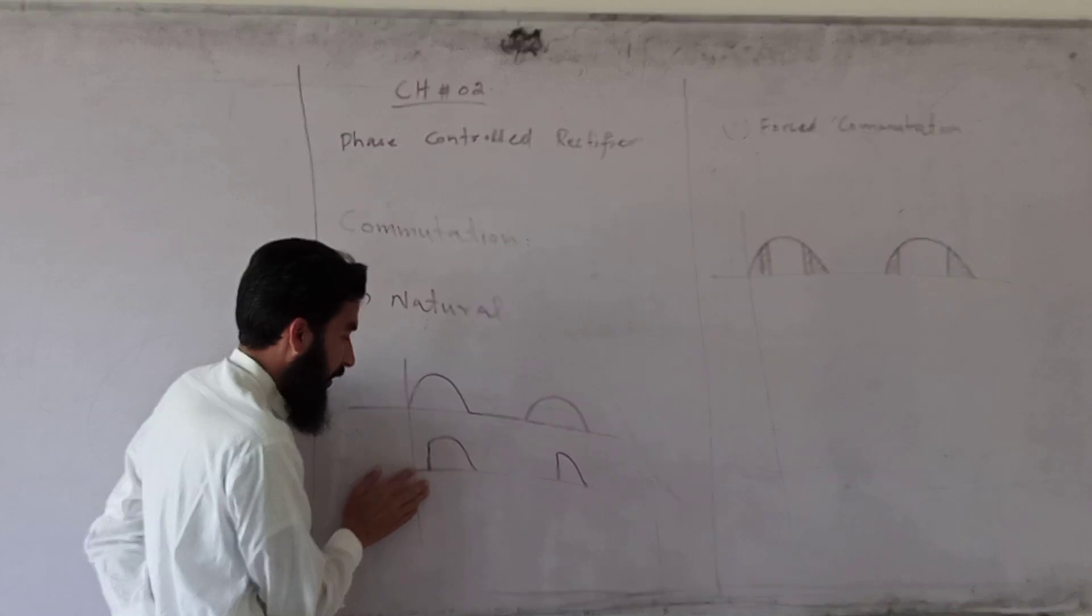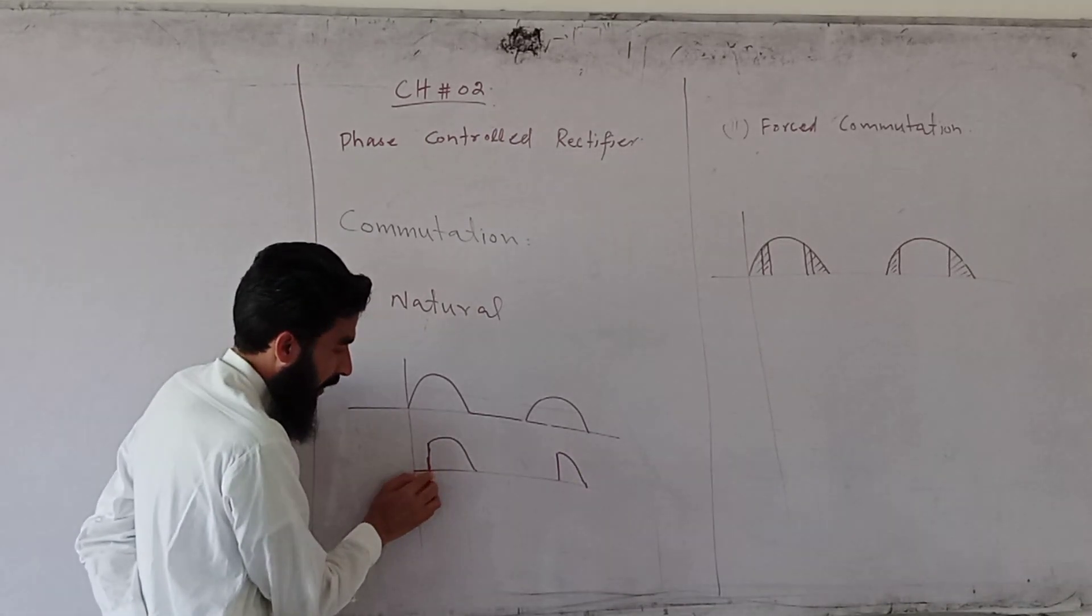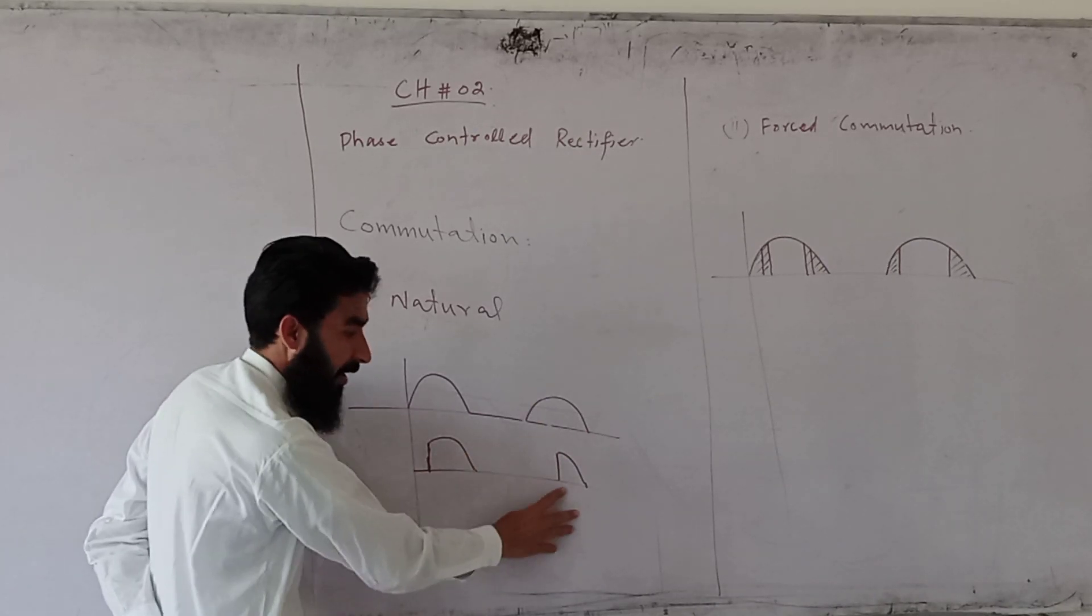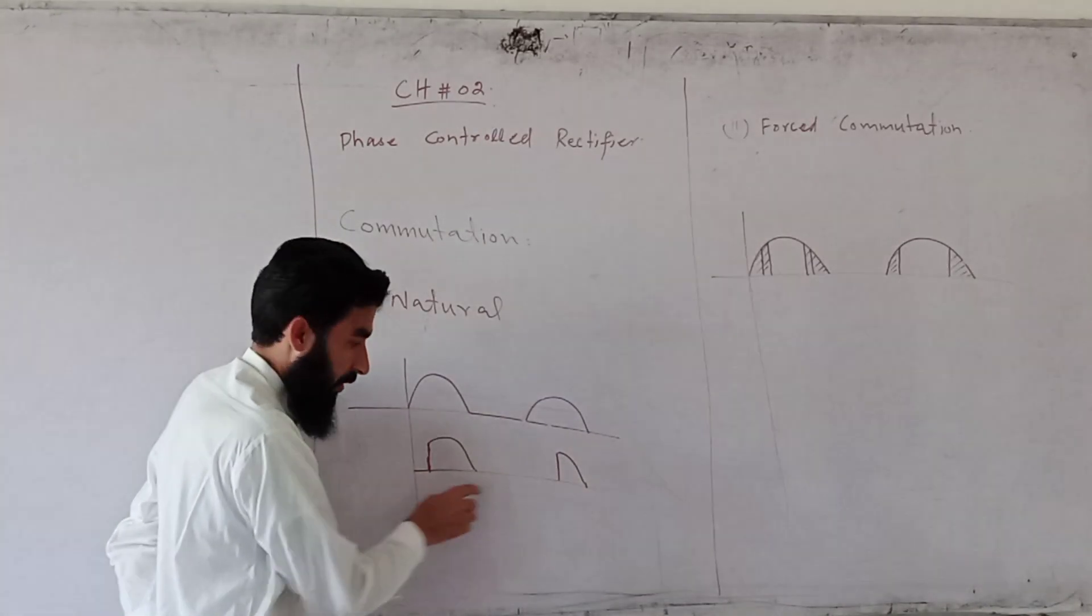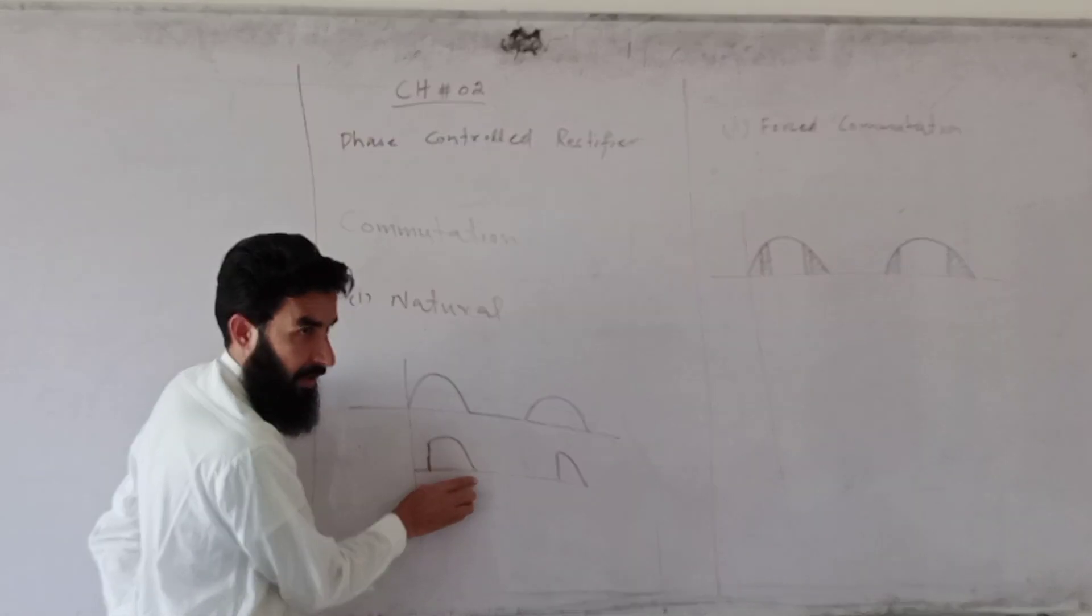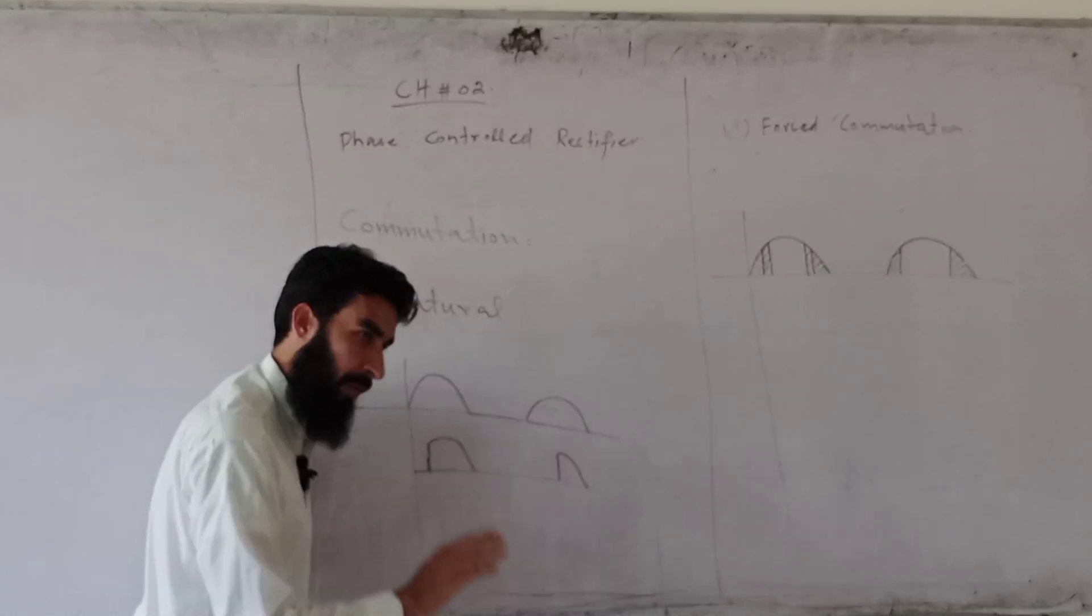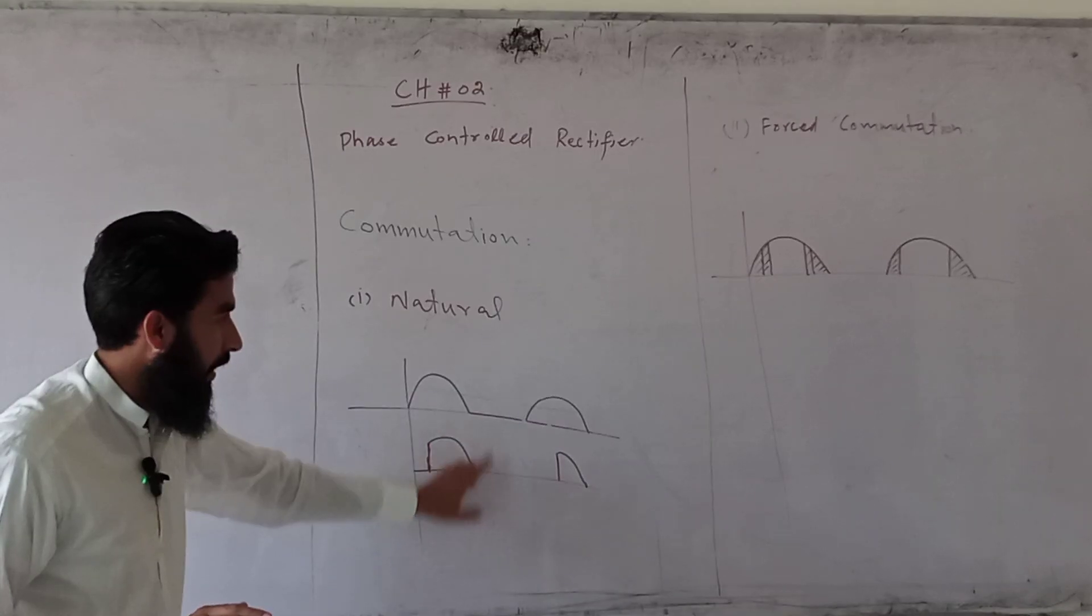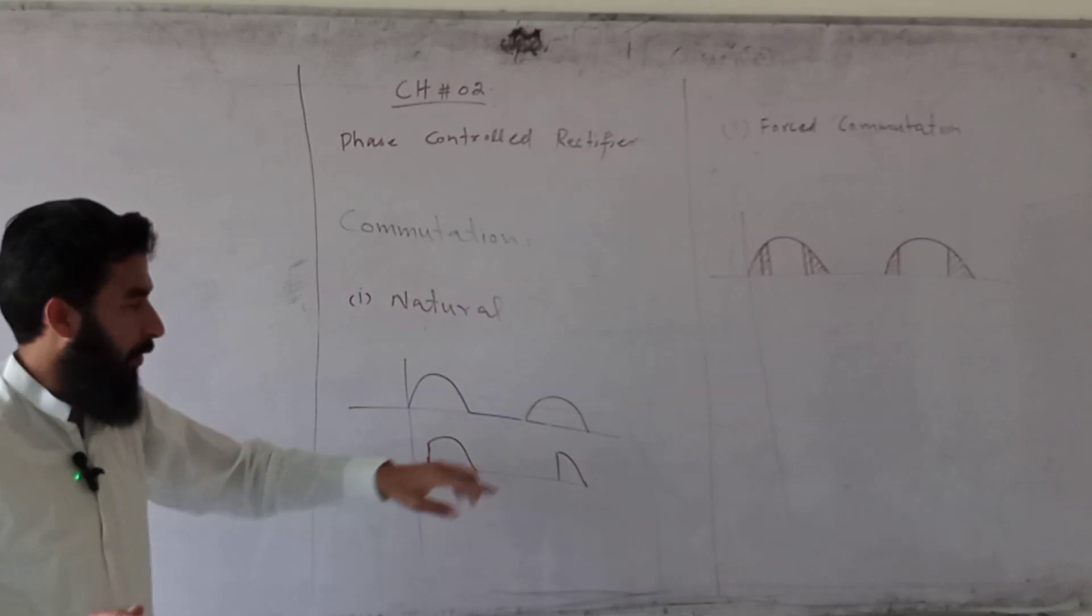For natural commutation, voltage starts at zero crossing, at 180 degrees. We can use diodes naturally for this. With diodes, the device will block naturally based on the power supply being positive or negative.